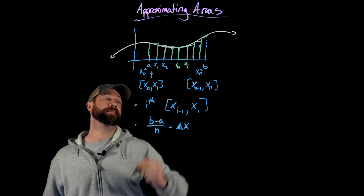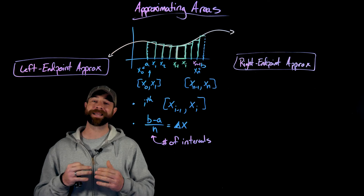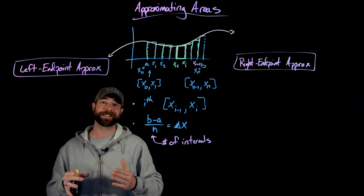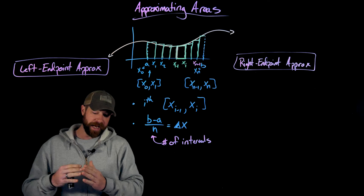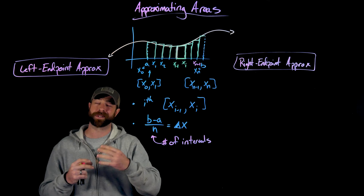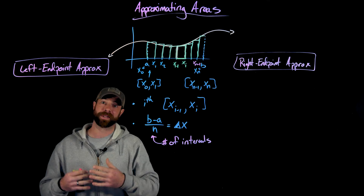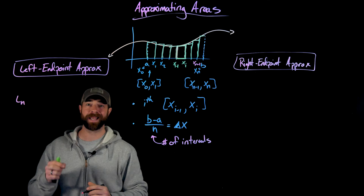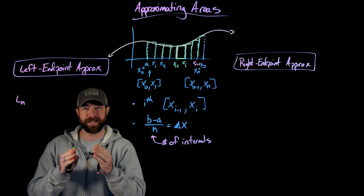The two approximation techniques we're going to use are either using the left endpoints of each sub-interval or the right endpoints. It's important to have both because they give us some kind of bounding for the area. If our function is increasing, the left endpoint approximation will under-represent the actual area, and the right endpoint approximation will give us an upper bound. So having both lets us sandwich in the actual area. The left endpoint approximation is labeled L sub N, where N represents the number of intervals, which defines delta X.